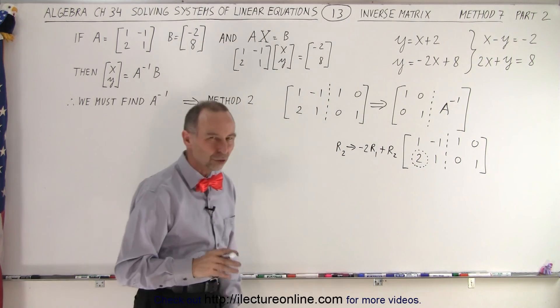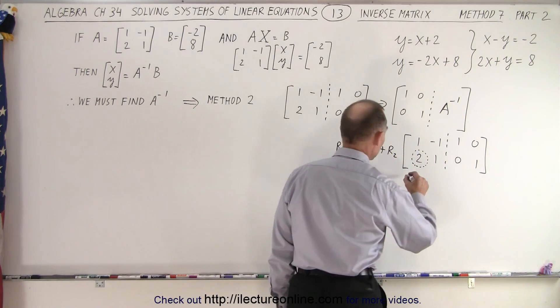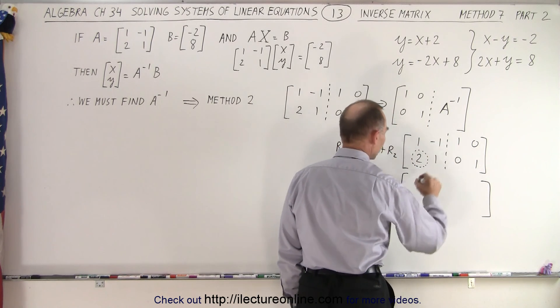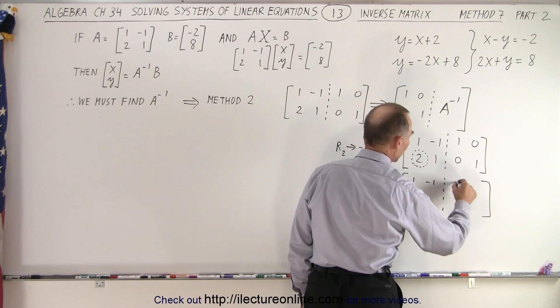So by now, this should become familiar if you watched the previous few videos. So when we do that, we get the following result. The first row doesn't change. So we get 1, negative 1. And here we get 1 and 0.